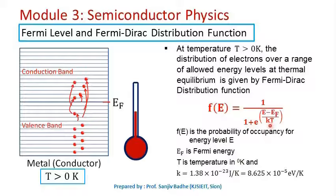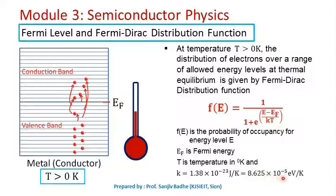The Boltzmann constant K has a value of 1.38 × 10⁻²³ joules per Kelvin. However, if E − EF is expressed in electron volts, then K must be written in electron volts per Kelvin, giving a value of 8.625 × 10⁻⁵ eV/K, which is obtained by dividing the value in joules per Kelvin by 1.6 × 10⁻¹⁹.